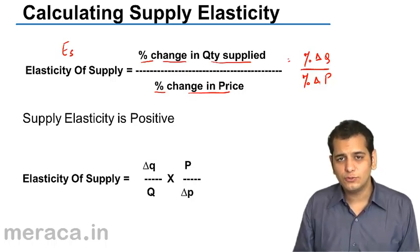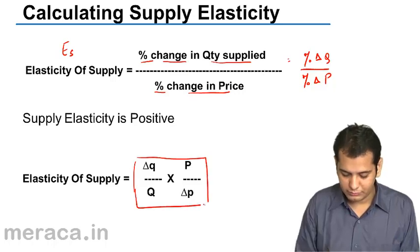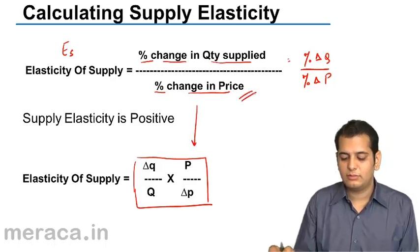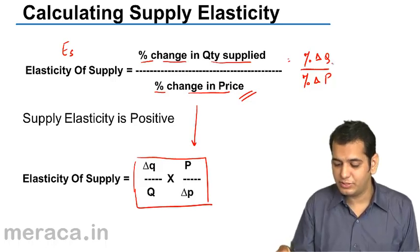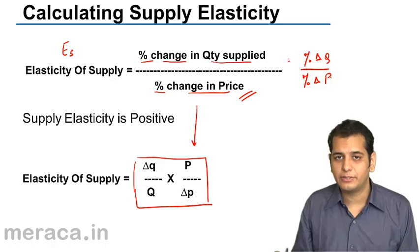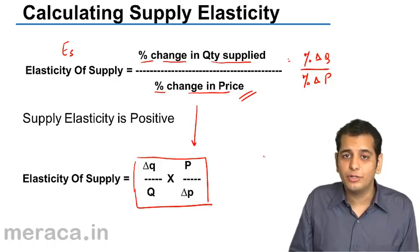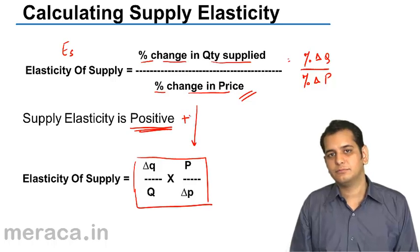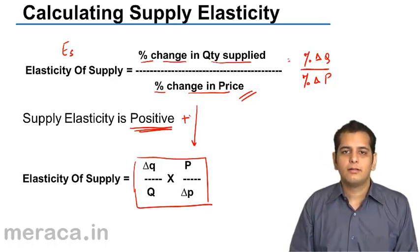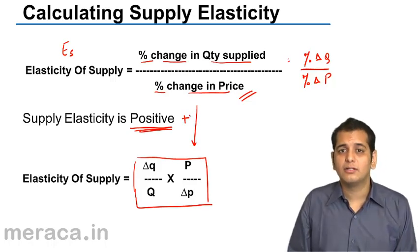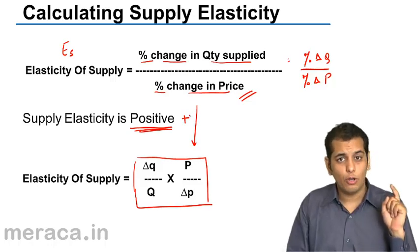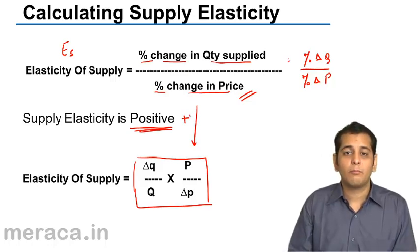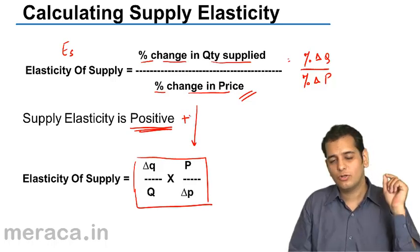Elasticity of supply is also calculated with this formula, which in turn has been derived from percentage change in quantity divided by percentage change in price. The important thing to remember here is that elasticity of supply is always positive. And if you go back to elasticity of demand, you'll remember that elasticity of demand is always negative — however, we ignore the negative sign — but the elasticity of supply is always positive.